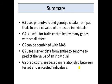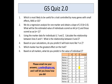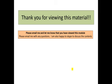Summary: Genomic selection uses phenotypic and genotypic data from past trials — training populations — to predict the value of untested individuals. It is useful for traits controlled by many genes with small effects, and can certainly be combined with marker-assisted selection. Genomic selection uses marker data from the whole genome to predict individual value, and in the simplest cases, it's based on the relationship between tested and untested individuals. Here is an optional quiz — feel free to send your answers if you'd like feedback. Thank you for viewing this material; contact me if you have any questions.